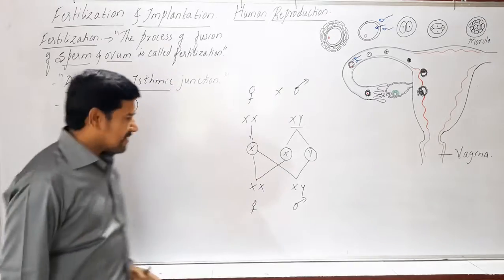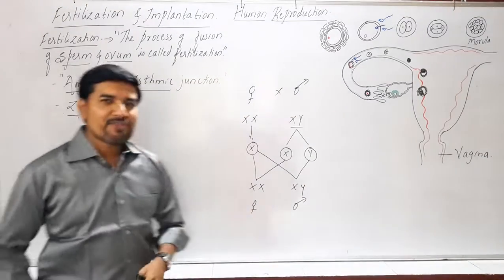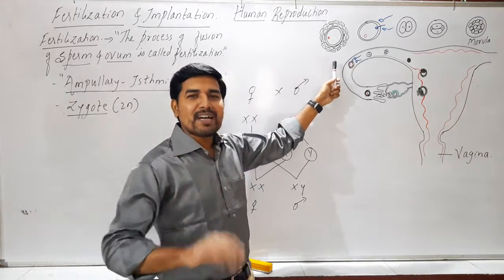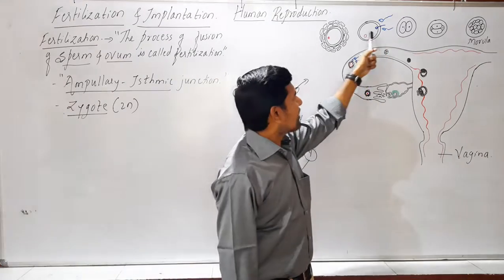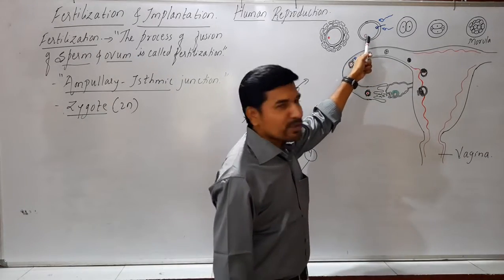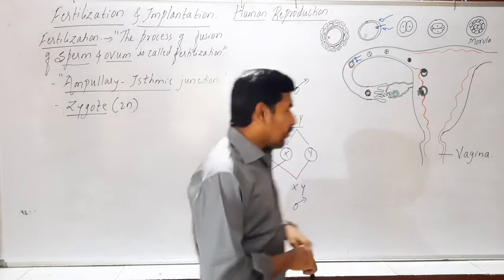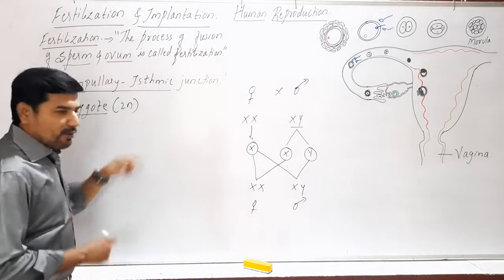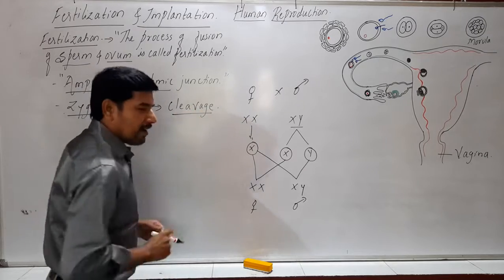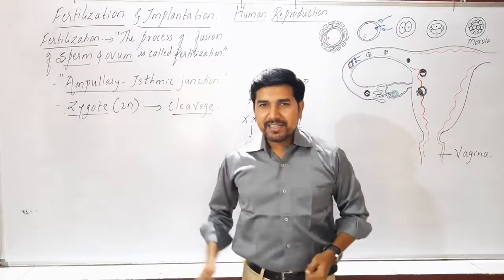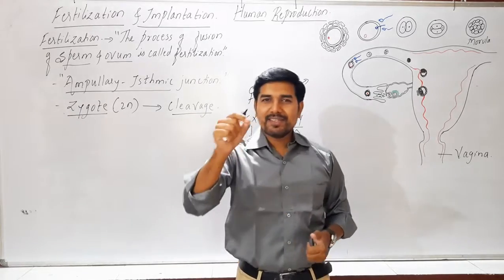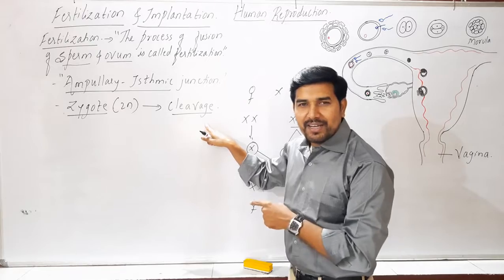After fertilization, the next events in the female reproductive system begin. The fertilized egg becomes a zygote. The next process after zygote formation is called cleavage. Cleavage is the mitotic division of the fertilized egg or zygote, during which the cell number continuously increases.